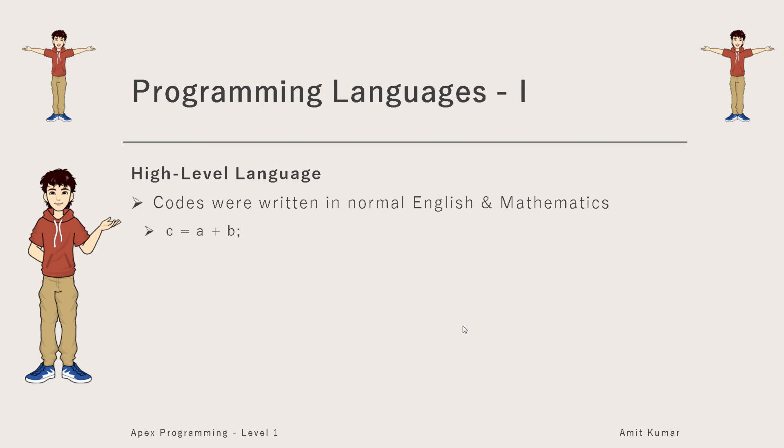As you can see, to add two numbers and store it at a place, we only need to write C equals A plus B. And definitely for the same in assembly language, we have to write some code like STR D, ADD A B, and something like that. So definitely high-level language was much more easier than the above two.